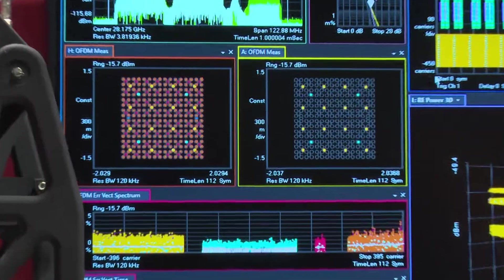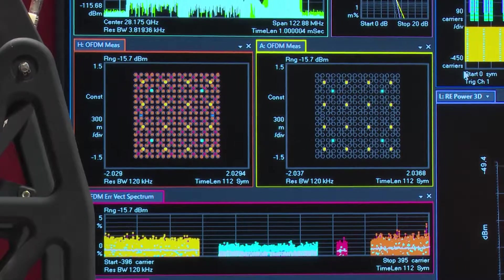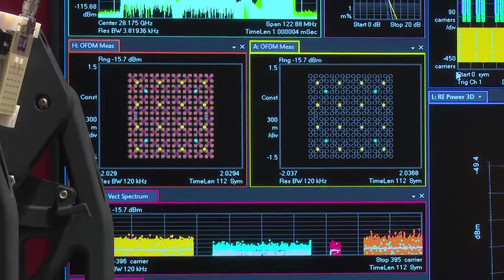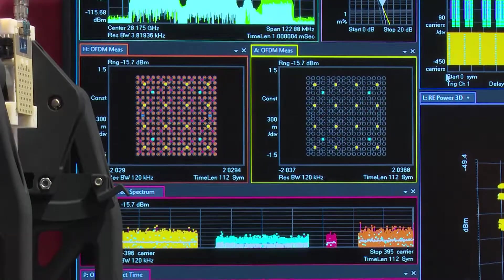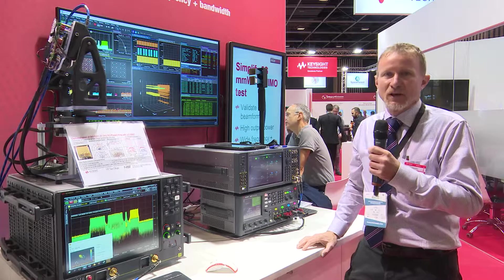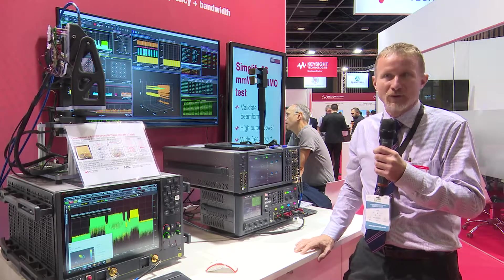We have the spectrum, CCDF curve, detected allocations. You see the two constellations for each of the different layers. So in fact you see that they're different and also having a wide range of modulation from BPSK through 256 QAM.